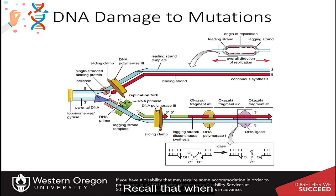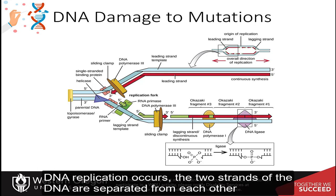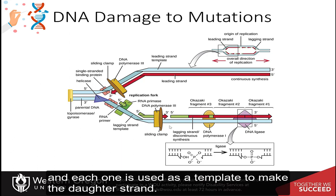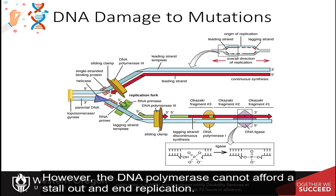Recall that when DNA replication occurs, the two strands of the DNA are separated from each other, and each one is used as a template to make the daughter strands. However, the DNA polymerase cannot afford to stall out and end replication.